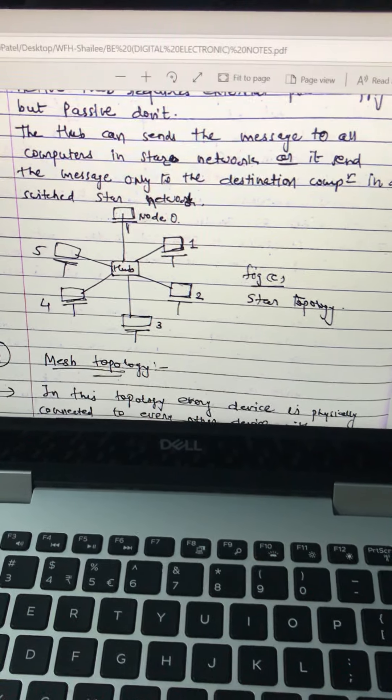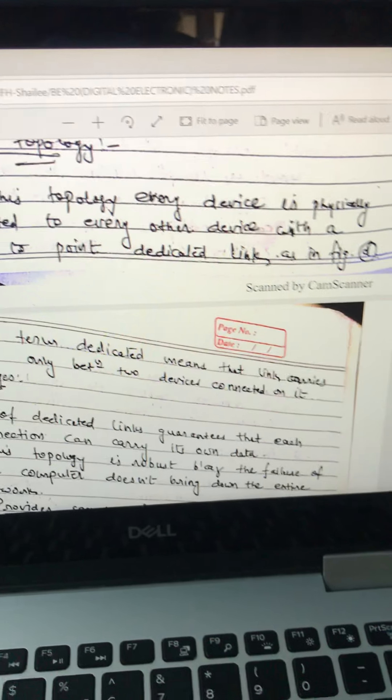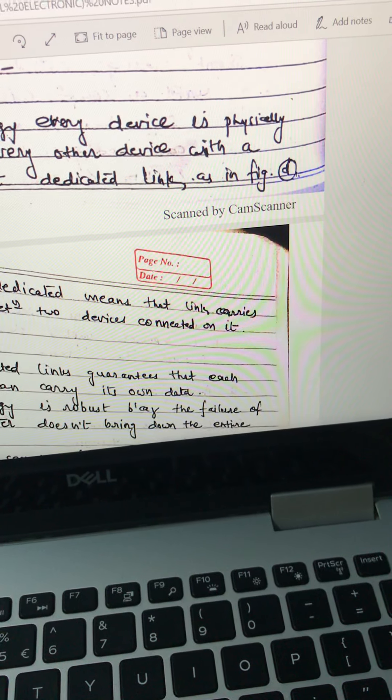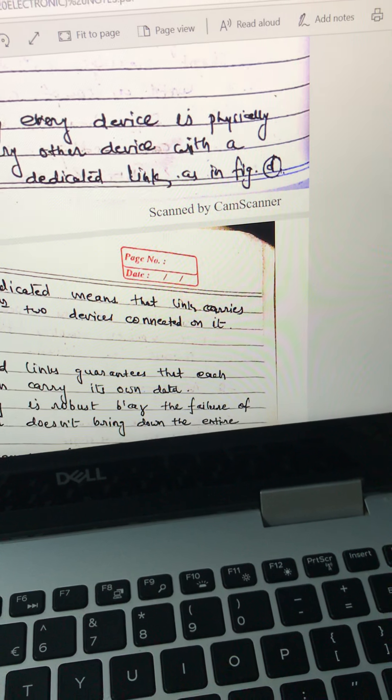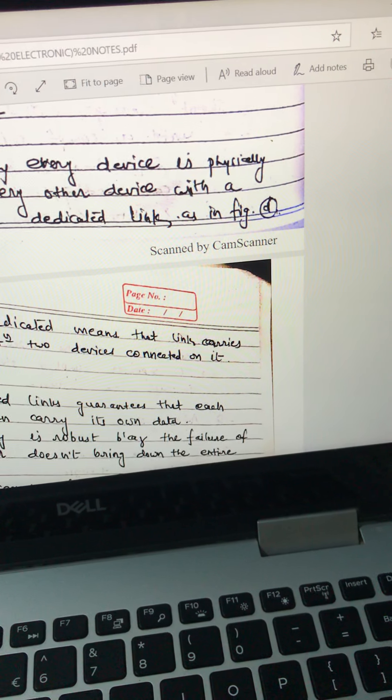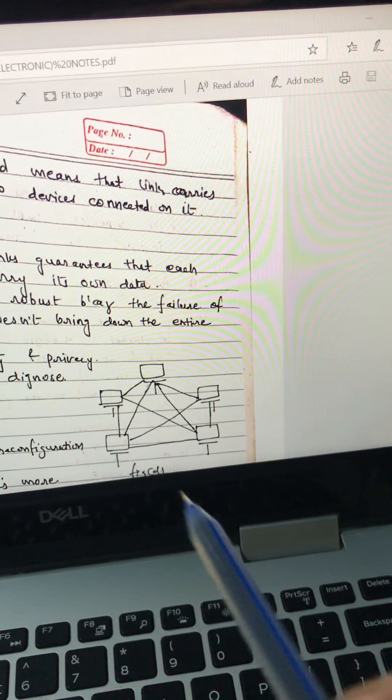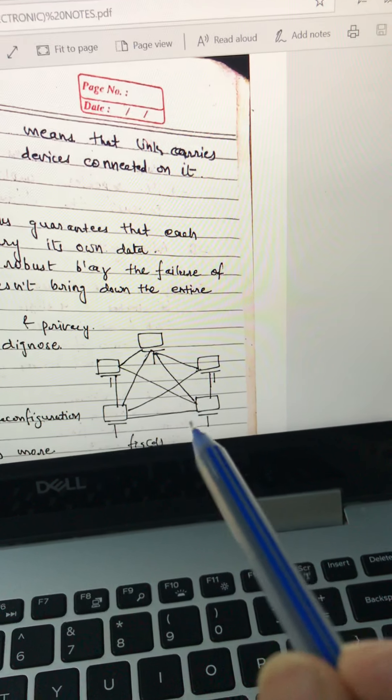When it came to the mesh topology, in this topology every device is physically connected to other devices with point-to-point dedicated links. The term dedicated means the link carries data only between two devices. See, connected to it. So this one is the mesh.